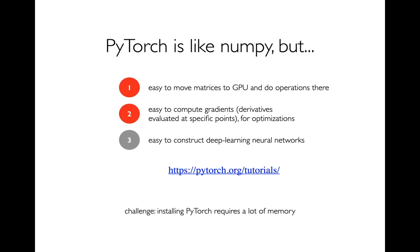We're often going to want to find what the best coefficients are on each variable. And then the third thing that PyTorch lets us do — that we're not going to cover at all in this class — is to construct deep learning neural networks. Just know that that's possible, but we aren't going to do it here. There are some great tutorials if you want to go beyond what we're doing in CS 320, and I'm giving a link to that.